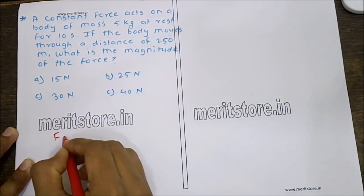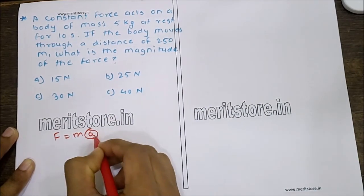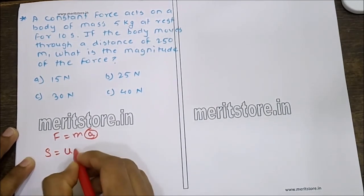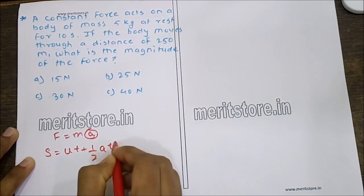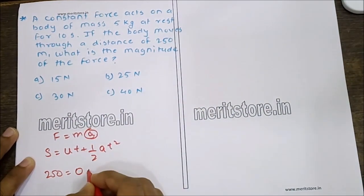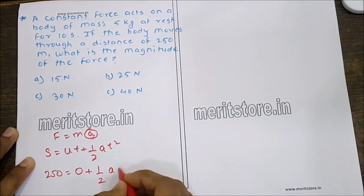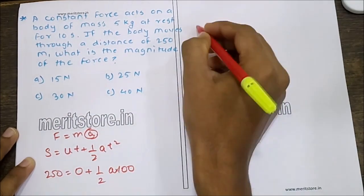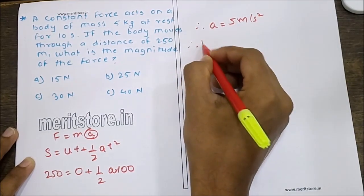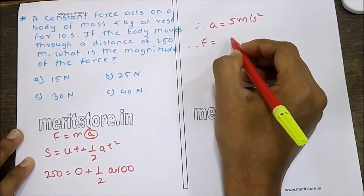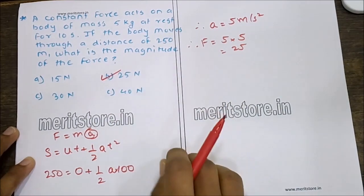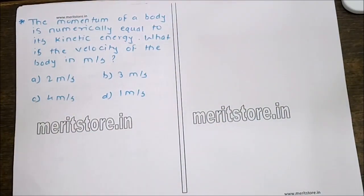To find force = mass × acceleration, first find acceleration using S = UT + ½AT². Displacement = 250 m, U = 0, T = 10 s: 250 = 0 + ½×A×100, so A = 5 m/s². Force = 5 × 5 = 25 N. Hence option B is the correct answer.